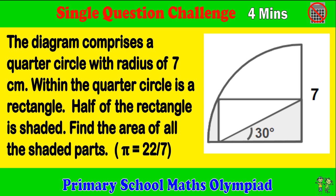The diagram comprises a quarter circle with radius of 7 cm. Within the quarter circle is a rectangle. Half of the rectangle is shaded. Find the area of all the shaded parts. Pi equals 22 over 7.